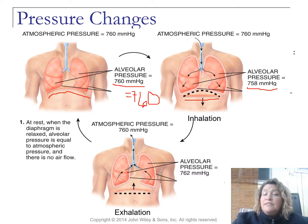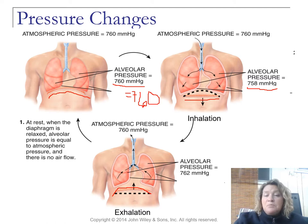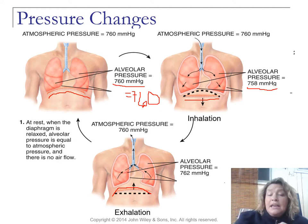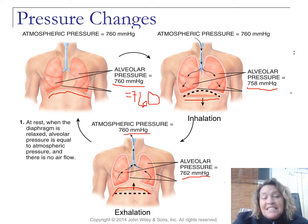Anytime you have less than atmospheric pressure, air is simply going to flow in — think of diffusion. During exhalation, the diaphragm returns to its dome shape, the thoracic cavity is lessened, and the alveolar pressure rises to 762 millimeters of mercury. Compared to 760, the higher pressure drives air flowing outward.